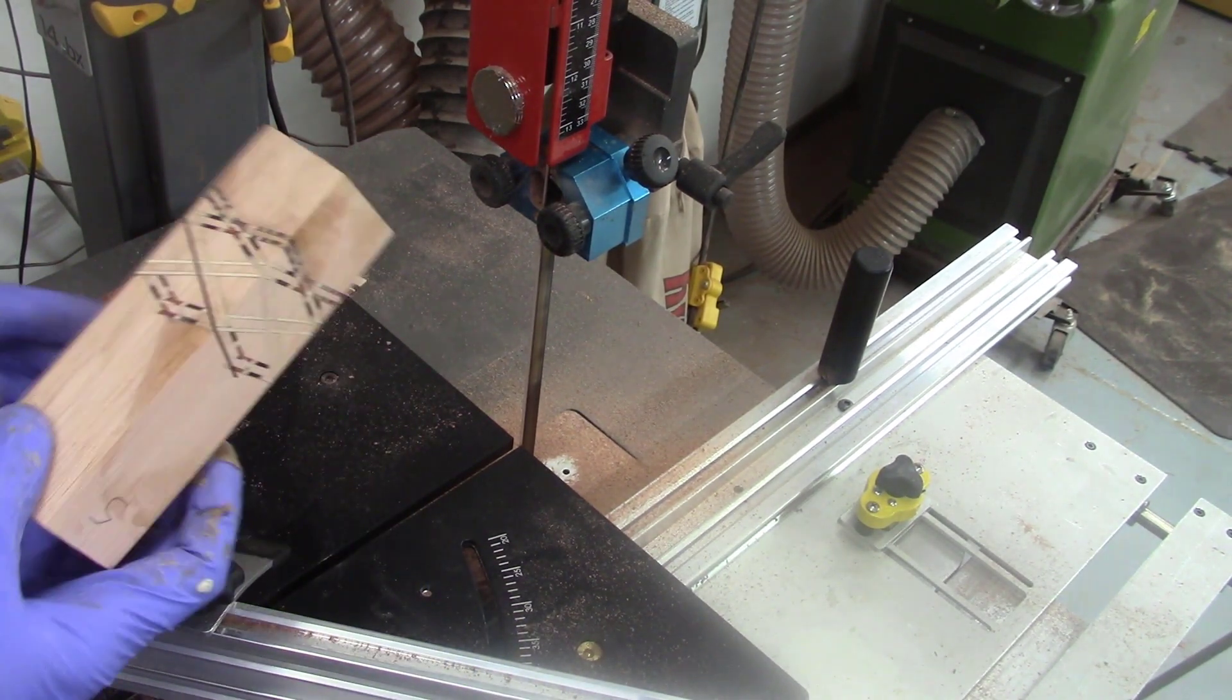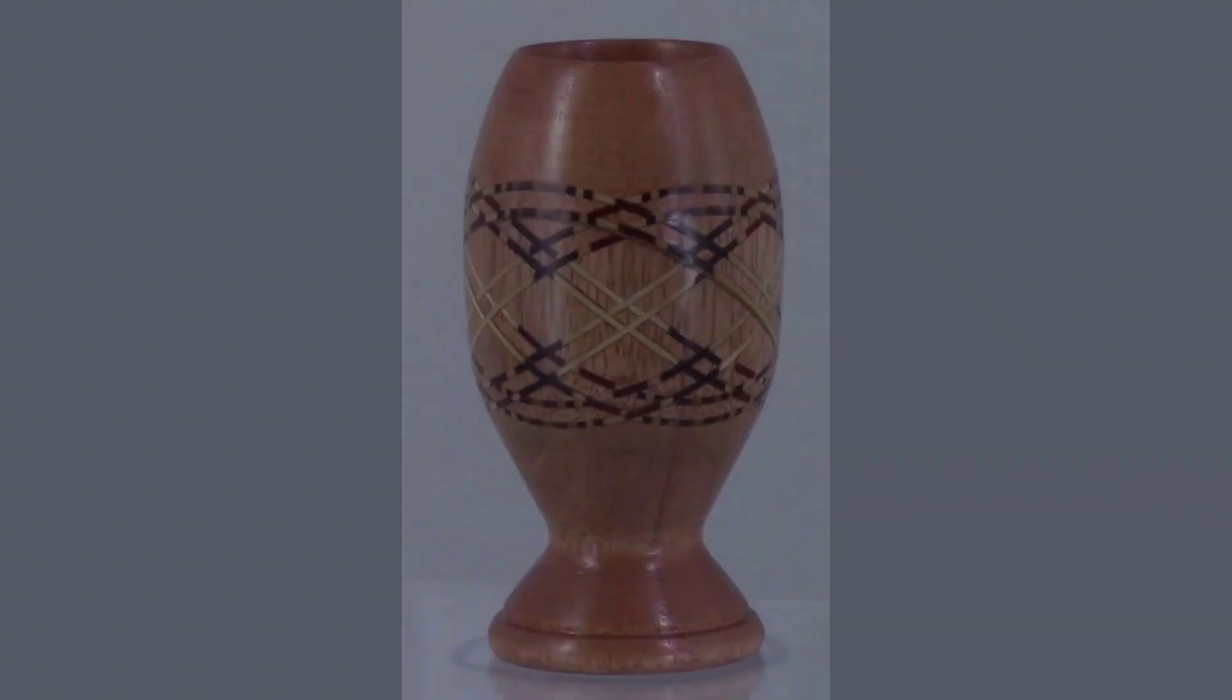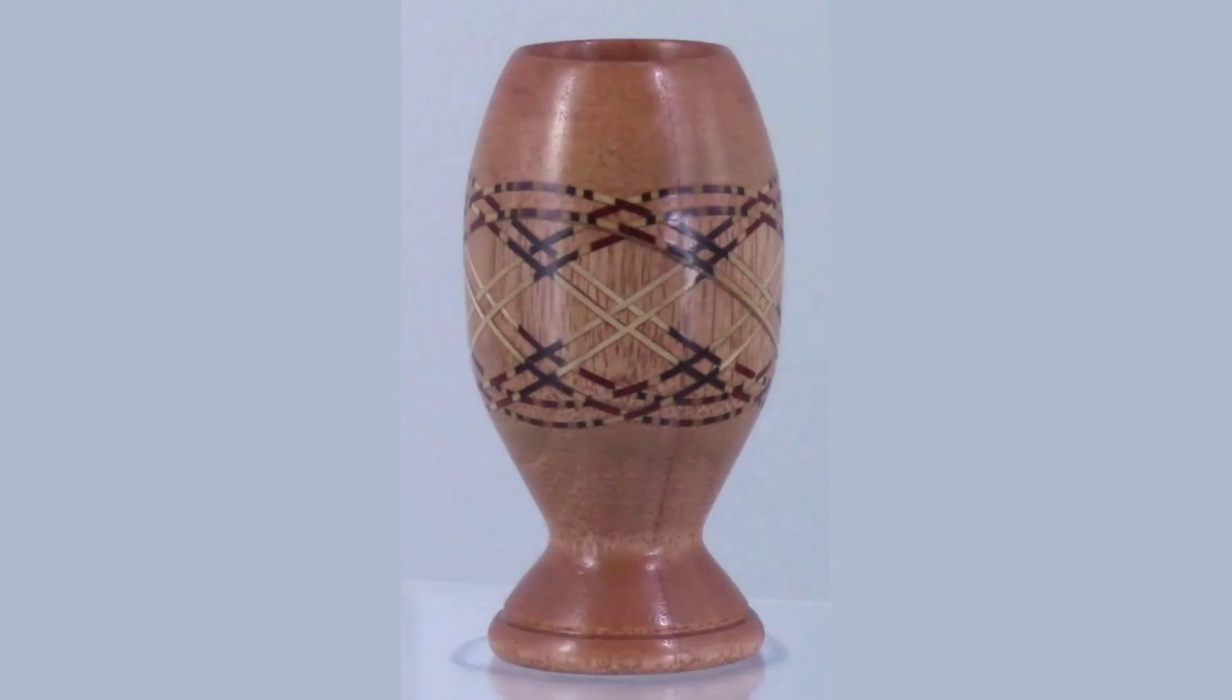So here you can see how I cut this slot in this six-sided cylinder, and I'll glue in an insert to finish this project. And here's a completed project after turning and finishing.